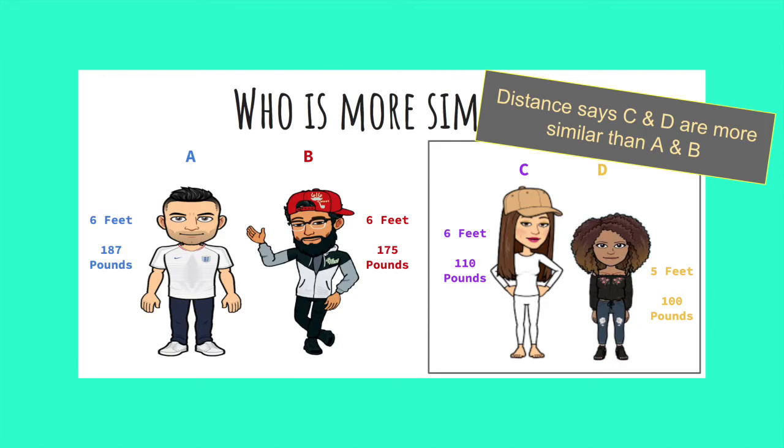As C and D had a smaller distance, this means they are more similar. However, this doesn't make much sense. Clearly A and B are more similar, but this is because our values are not scaled. The difference in height between C and D is one foot, but since weight is a much larger scale, it overpowers a significant difference in height.